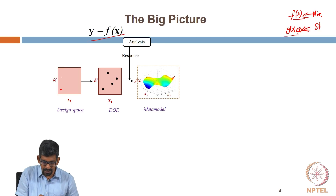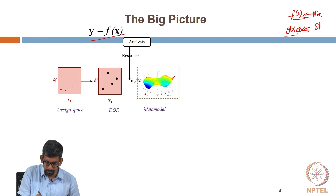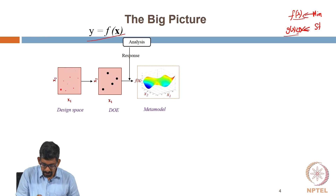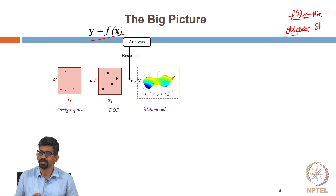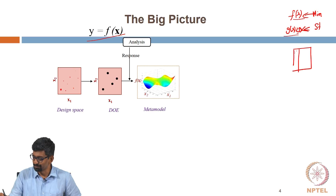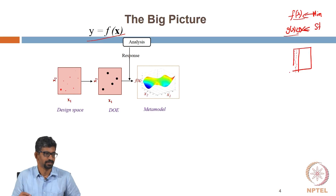So I will start populating 120 points in my design space — each one is a different x1, x2 combination and they are likely to give different y values. Now, how can I place these points inside this design space? What should be my criteria? I can say I do not like the right side, so we will keep all of them on the left side.